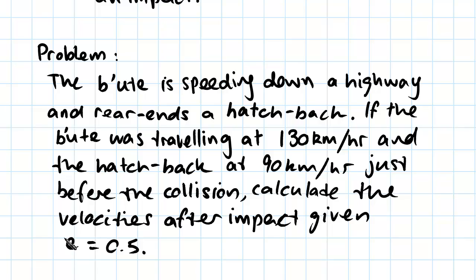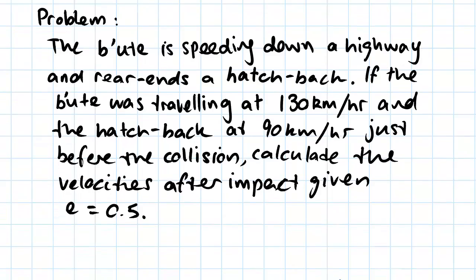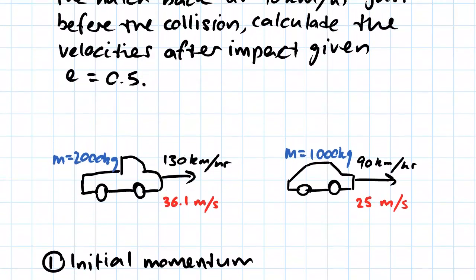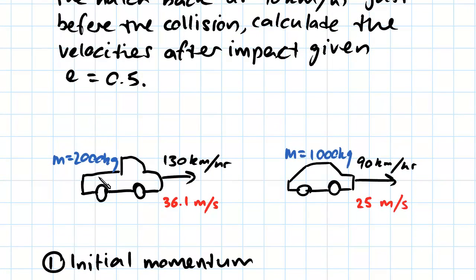So here is a diagram of what's going on. We have a ute which is going at 130 kilometers per hour. I've converted that into meters per second just by multiplying by a thousand and then dividing by 60 twice, and that gives you 36.1 meters per second.